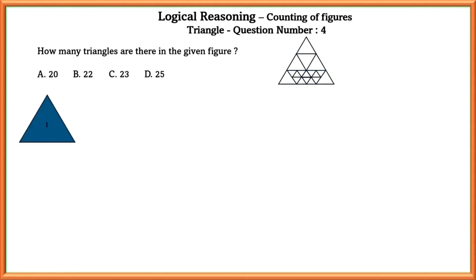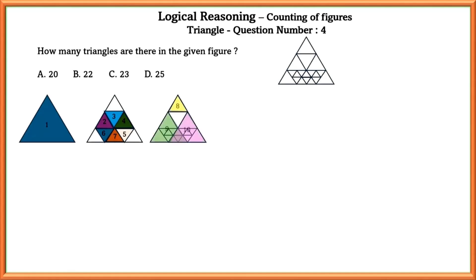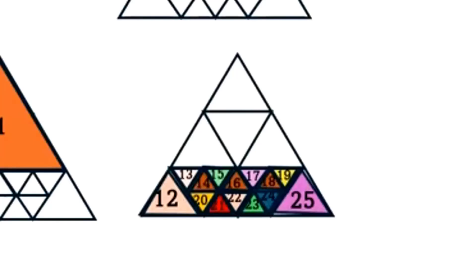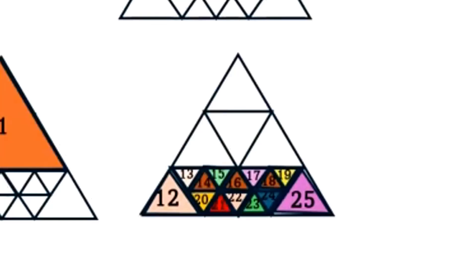Question number four: how many triangles are there in the given figure? The total figure is itself a triangle, so we get one triangle. Excluding the top and each corner triangle, the middle one gives six triangles. Excluding the middle triangle and forming triangles using each of the figures gives three more. From the top one we get one more triangle. Counting all the small triangles in between, we get a total of 25 triangles.